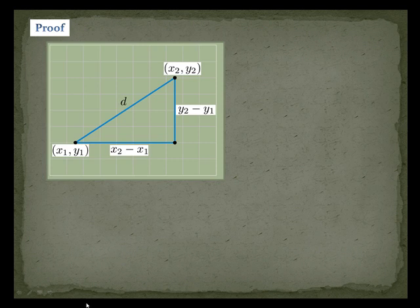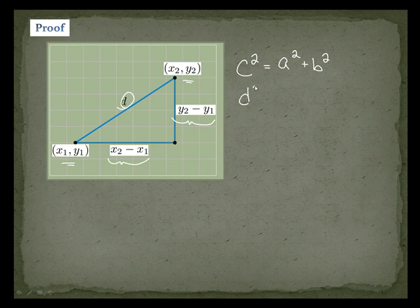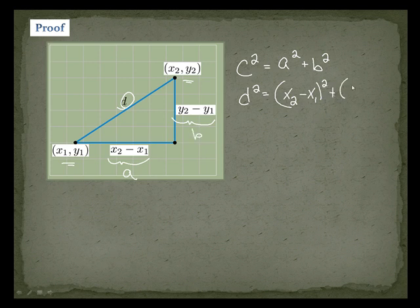Let me show you a quick proof of how we come up with the distance formula. Here's my P1, point 1, and here's my point 2. This is the distance between the x values, and this is the distance between the y values. We're going to use the Pythagorean Theorem: c² = a² + b². So c squared is your hypotenuse, so that's d. d² = (x₂ − x₁)² + (y₂ − y₁)².